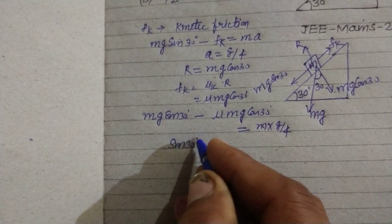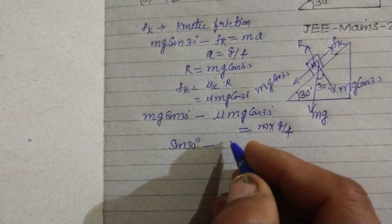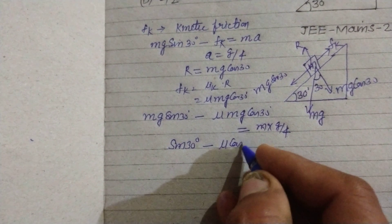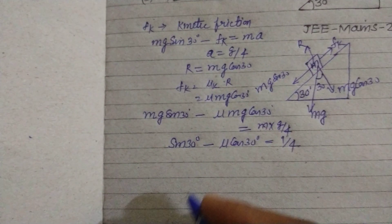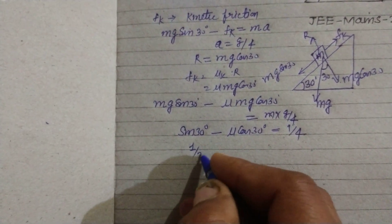So this becomes sin θ minus μ cos 30° equals 1/4. Sin θ you know that is 1/2.